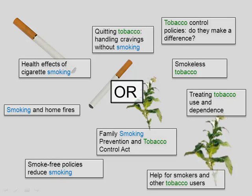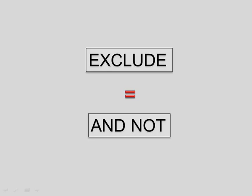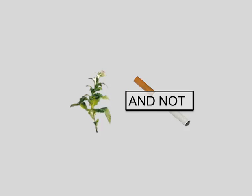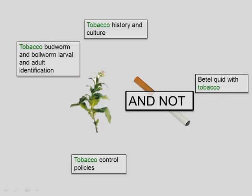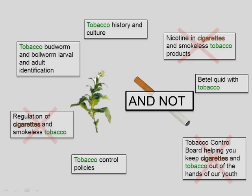If you want to exclude a term from a search, use AND NOT before the term. This connector should be used carefully because you might eliminate items you want. A search for tobacco AND NOT cigarettes will exclude records with the term cigarettes from the search.